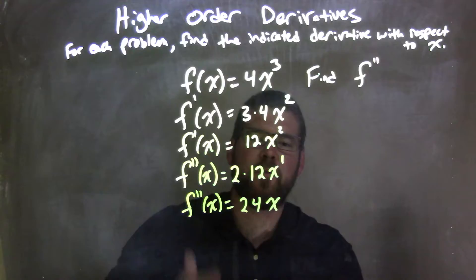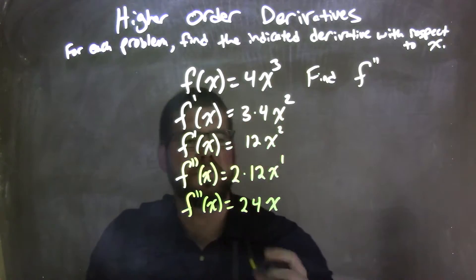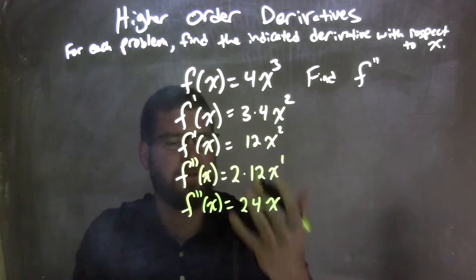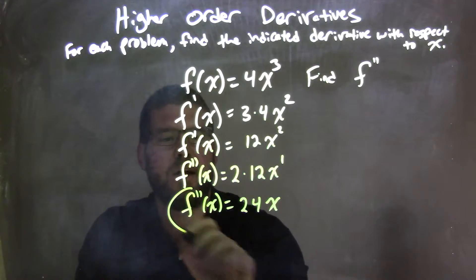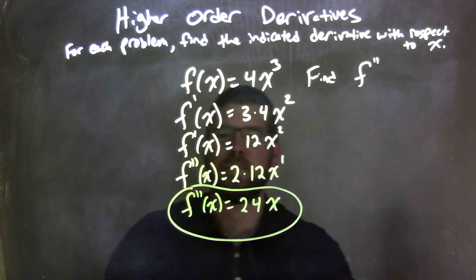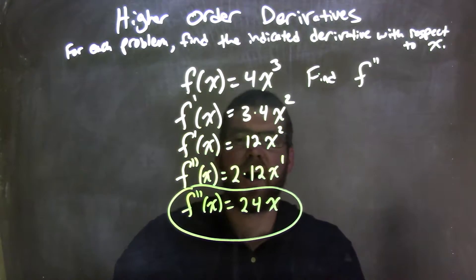And we don't really write the first power for it, because that's just not the proper way of doing it. We just know there's 1x, just x to the first power. And there is our final answer. The second derivative of f of x is 24x.